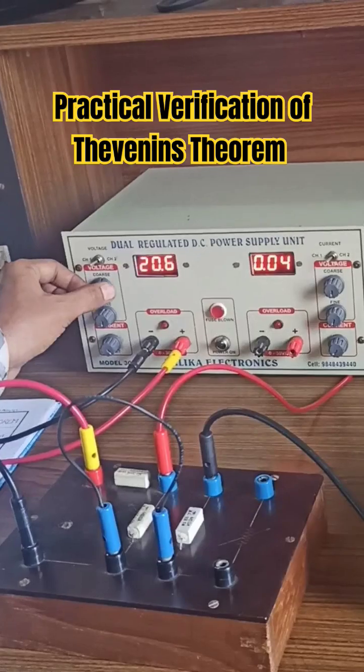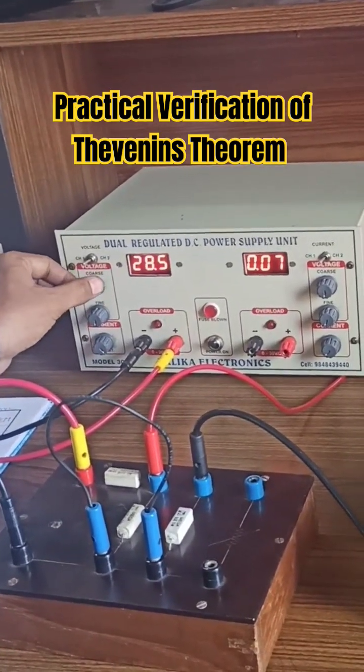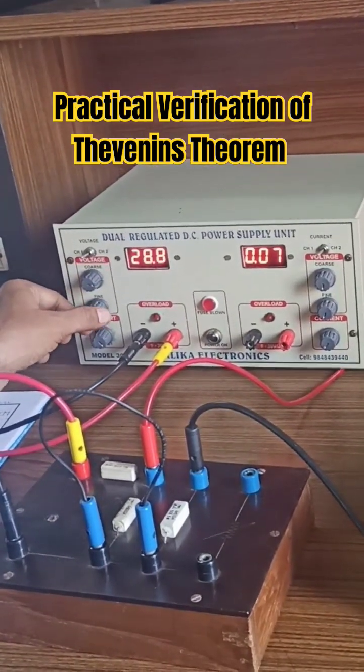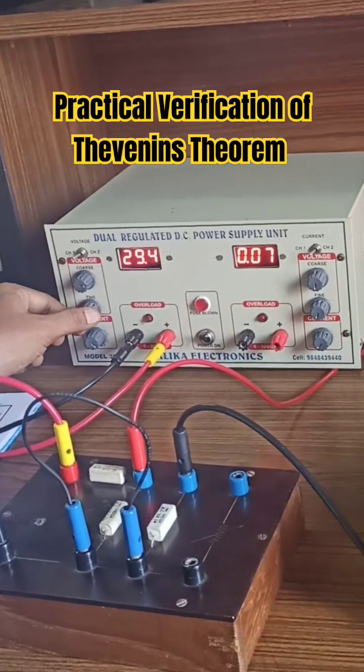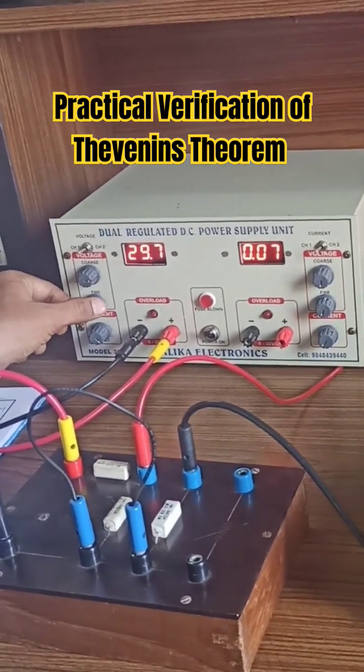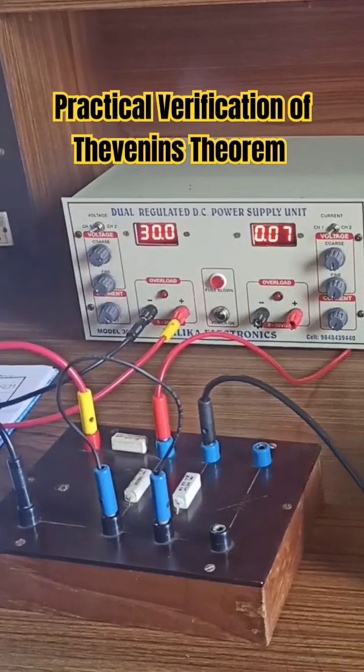As soon as you slowly increase the voltage, we need to apply a voltage of 30 volts and then go for fine adjustment. Approximately we have applied 30 volts.